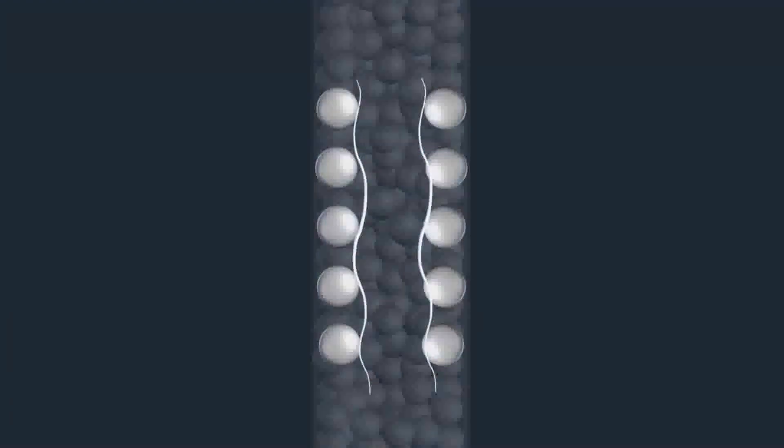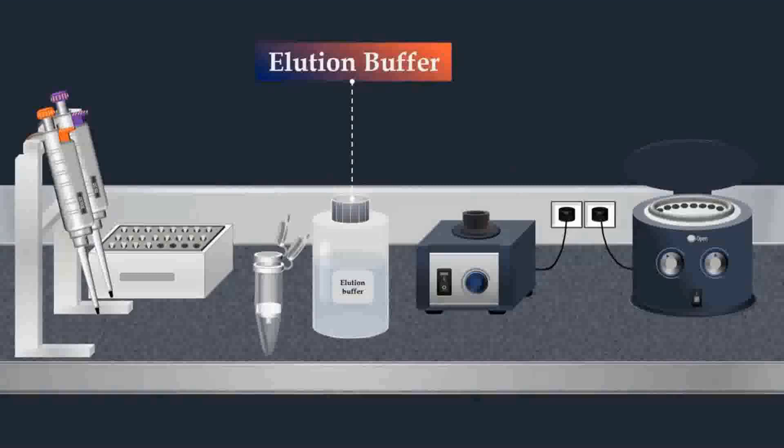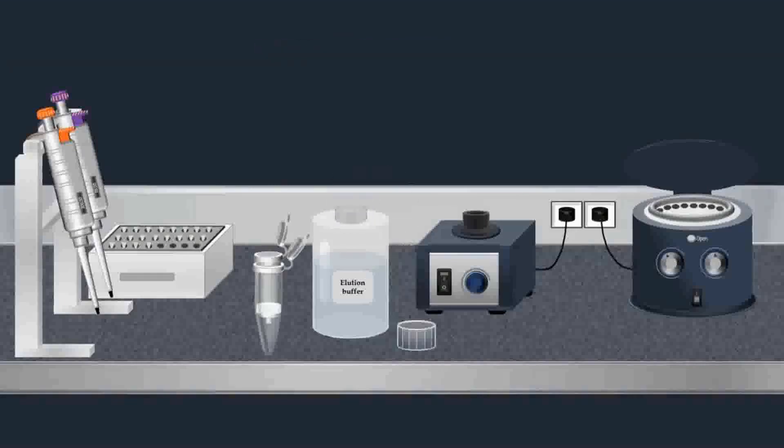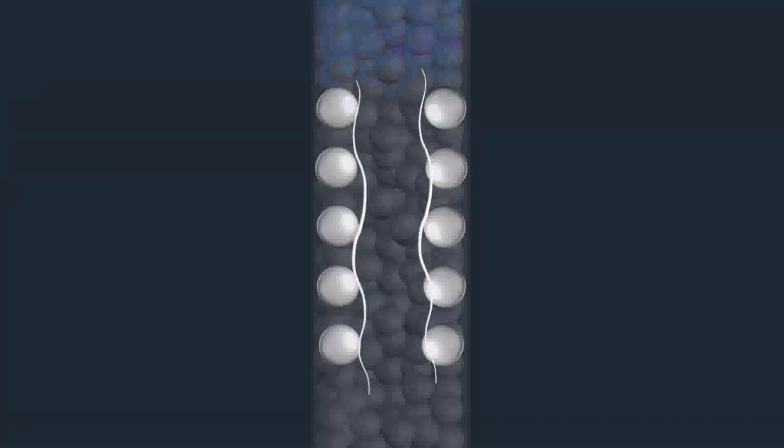Once the sample is washed, the column is placed in a clean microcentrifuge tube, and an elution buffer is added. Then centrifugation is carried out, forcing the elution buffer through the membrane. The elution buffer removes the viral RNA from the spin column, and purified RNA which is free of protein, inhibitors, and other contaminants is obtained.